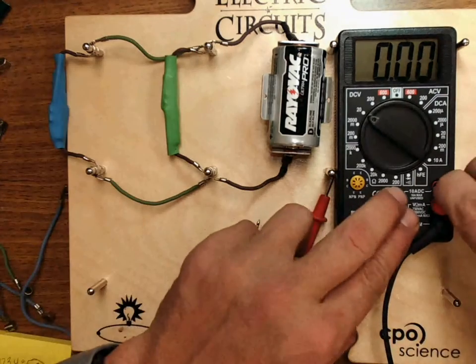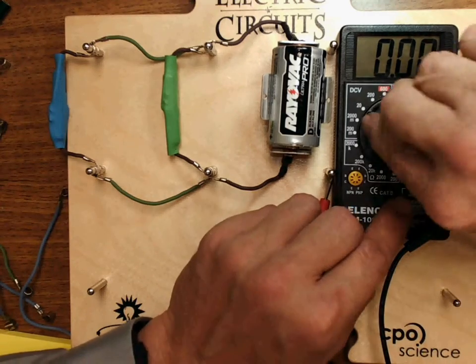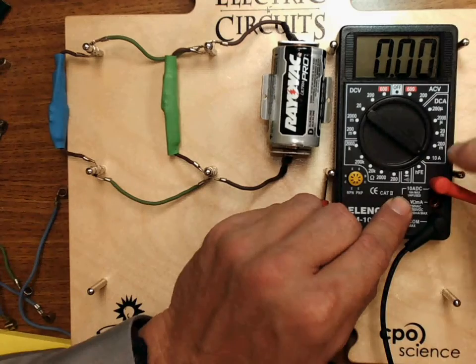Now to measure current I need to move the lead up to the top hole where it says 10 amps and then flip around to the 10 amps.